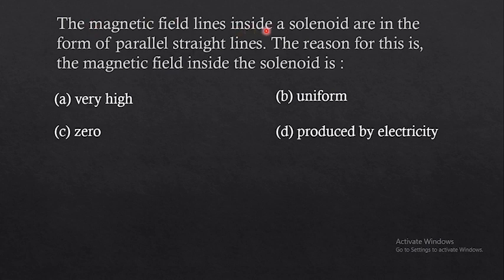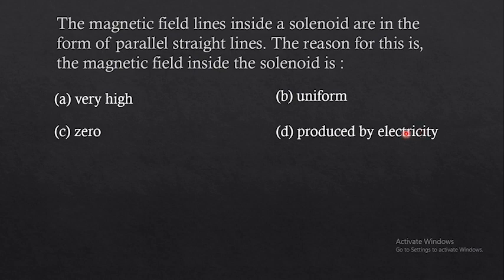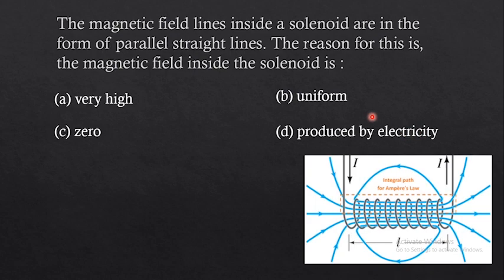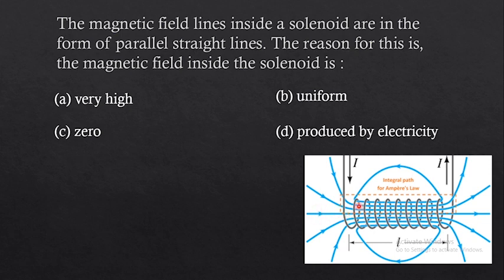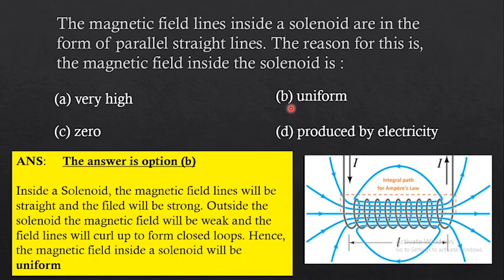The next question: magnetic field lines inside a solenoid are in the form of parallel straight lines. The reason for this is that the magnetic field inside the solenoid is — options are: very high, uniform, zero, or produced by electricity. The answer is option B. The reason is that the magnetic field lines inside the solenoid are uniform.